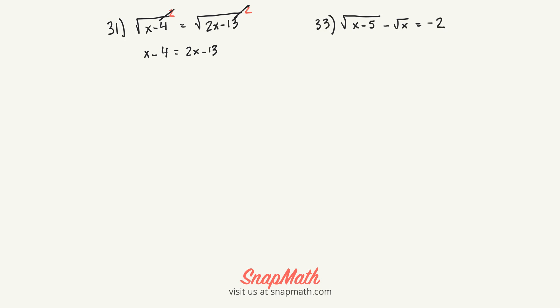Then I'm going to move over the x value here, and at the same time add 13 to both sides. These will cancel each other out, and you're left with 9 equals x. That's your answer.